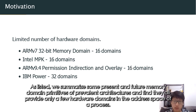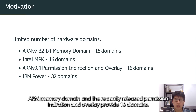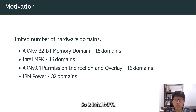As listed, we summarize some present and future memory domain primitives of prevalent architectures and find they all provide only a few hardware domains for a process. ARM memory domain and the recently released permission indirection and overlay provide 16 domains, so does Intel MPK. IBM Power offers 32 domains.